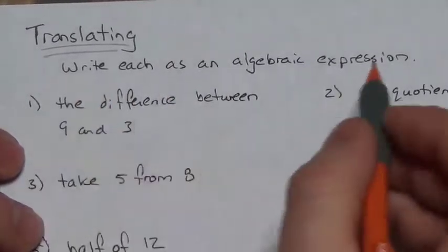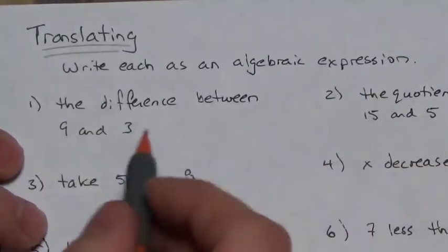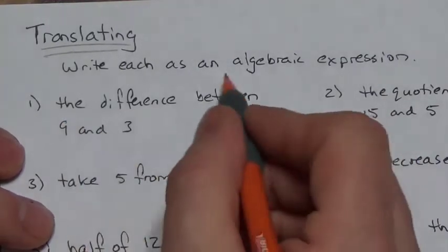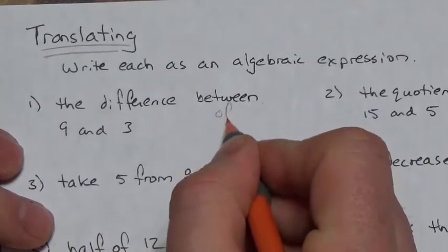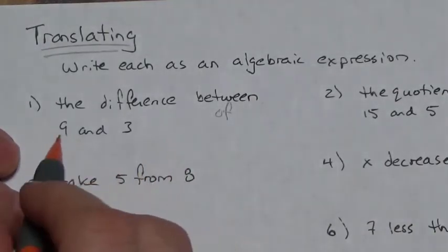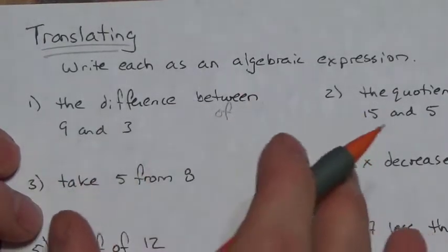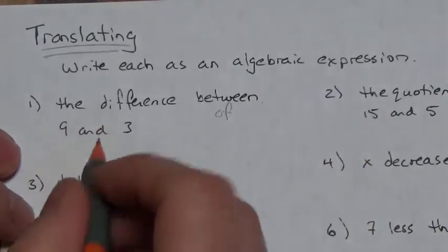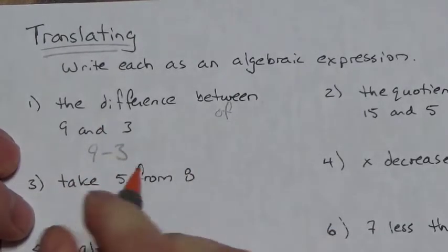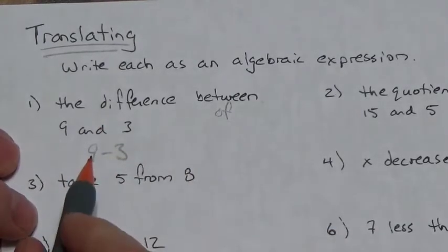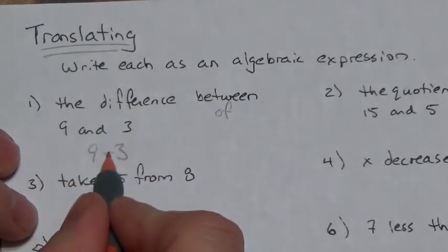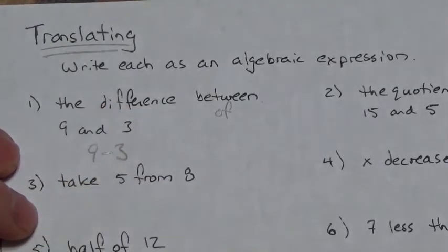So we're going to translate this into an algebraic expression: the difference of nine and three. When it's written like this, typically we want nine to be the first number and three to be the second number. So we want this to be nine minus three — the word 'difference' means subtraction.